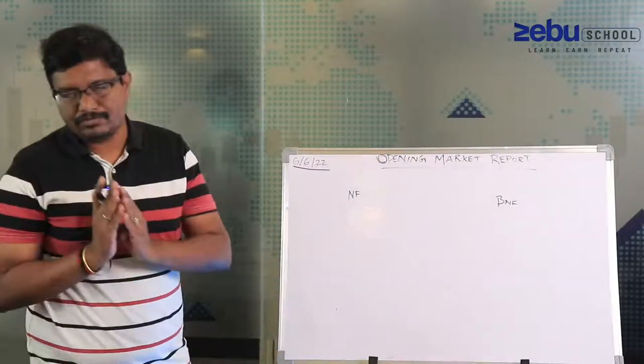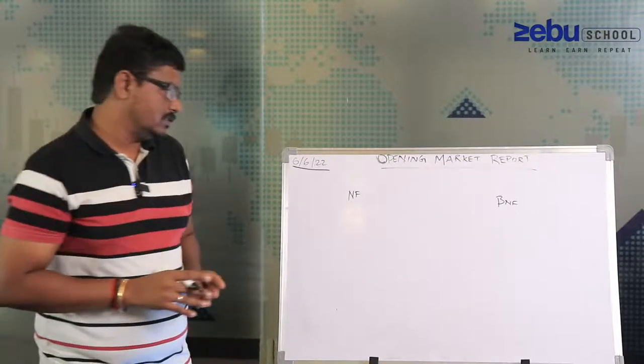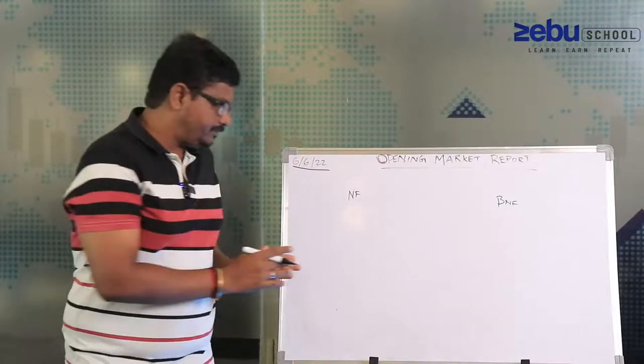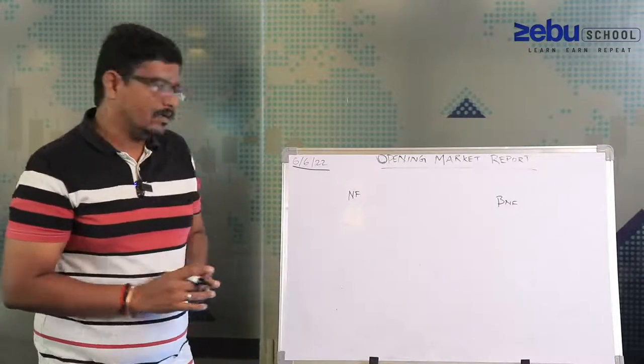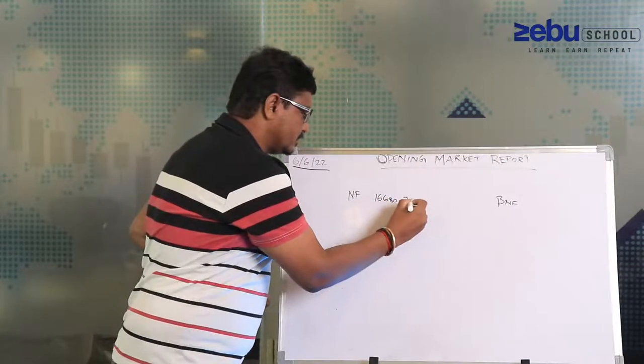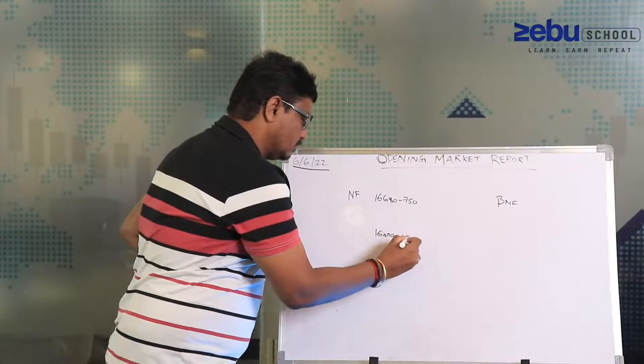If you remember my last update, I wrote down some levels in terms of Nifty and Bank Nifty. If you can recall or go back to the last Monday or Tuesday video or the last video done by me on market opening report, I'm going to recall those levels. The levels were somewhere around 16,680 to 750 zone, and 16,400 to 450 zone.